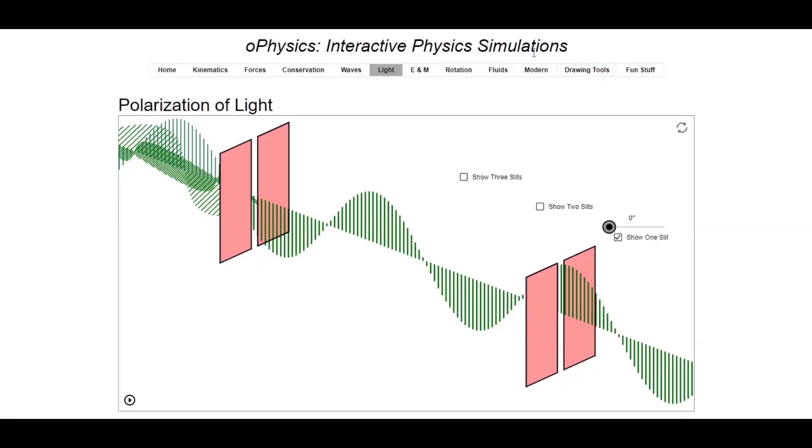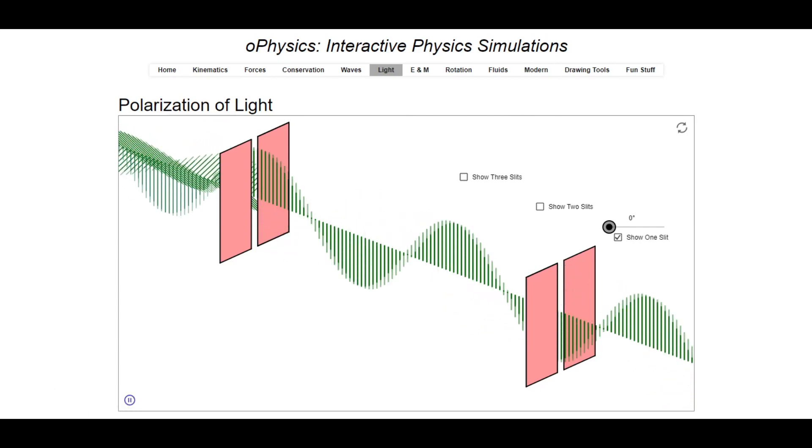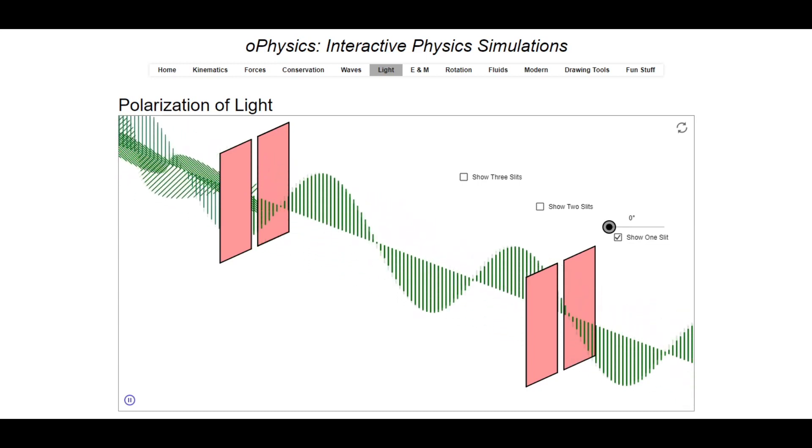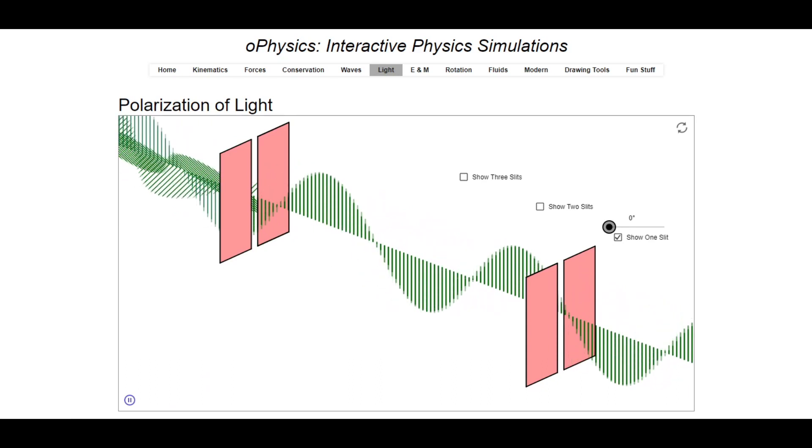We can see how linear polarizers work using the simulation from O-Physics Interactive. On the left side is unpolarized light passing through a linear polarizer. When it passes through, the light is now polarized in the same direction as the linear polarizer.